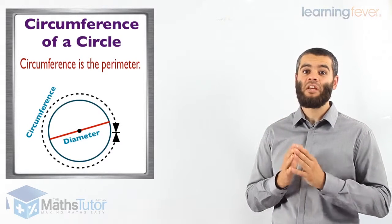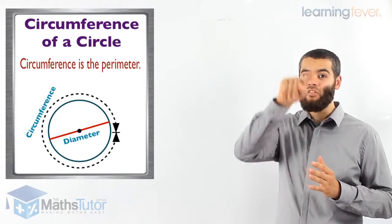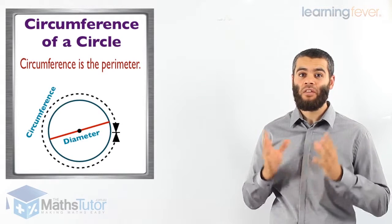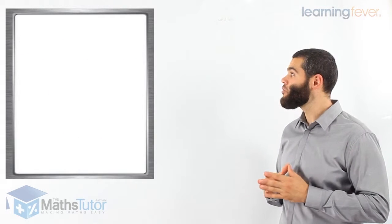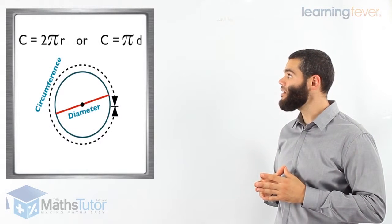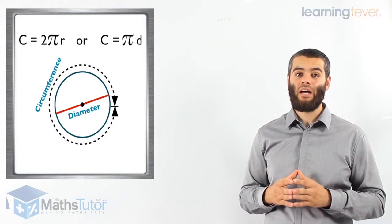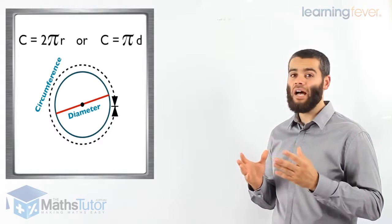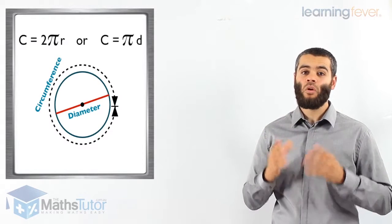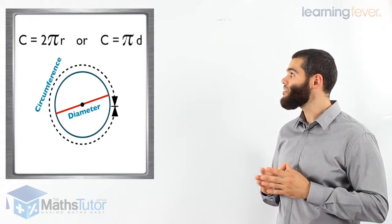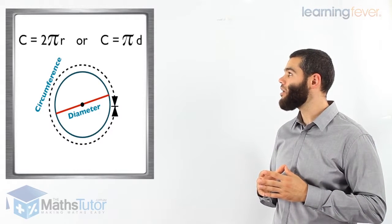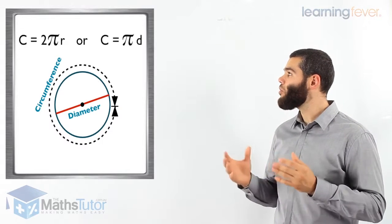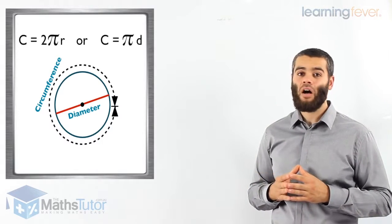Remember, the circumference is the perimeter. It is the outside of the circle and it has a special formula. The formula is C equals 2 pi r — circumference equals 2 times pi times r, where r is the radius. Or another formula: C equals pi times d, for diameter. You can use C equals 2 pi r or C equals pi d.